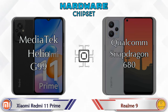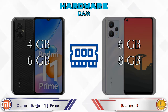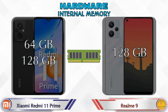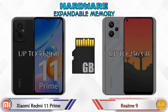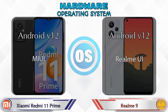Talking about RAM, Xiaomi Redmi 11 Prime has two options: 4GB and 6GB RAM, while Realme 9 has two options: 6GB and 8GB RAM. For internal storage, Xiaomi Redmi 11 Prime offers 64GB and 128GB, while Realme 9 has only 128GB. Expandable memory on Xiaomi Redmi 11 Prime goes up to 512GB and on Realme 9 up to 256GB. Both phones run Android 12.